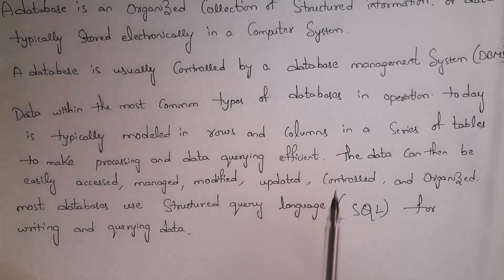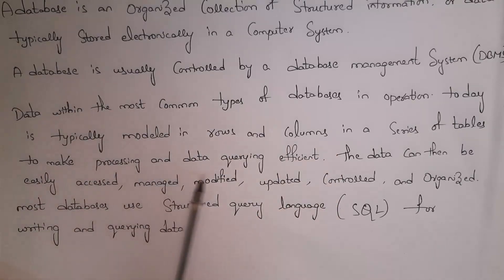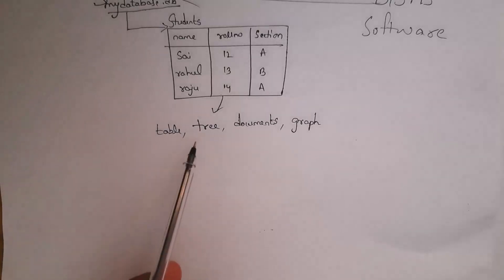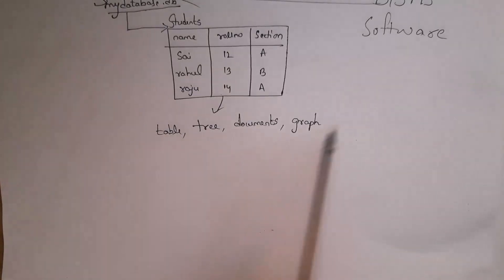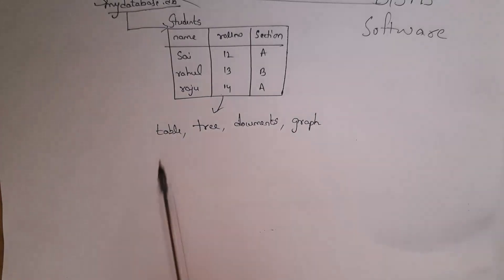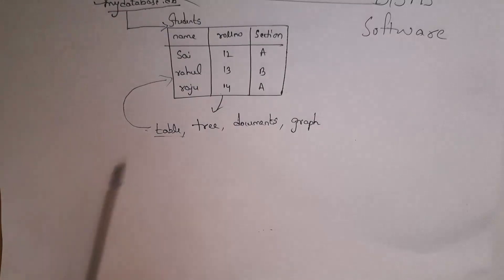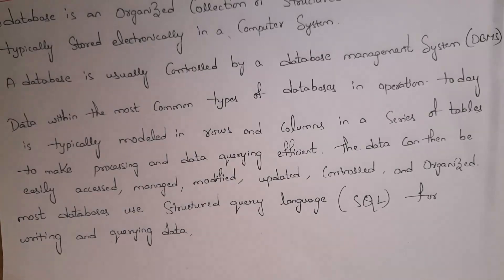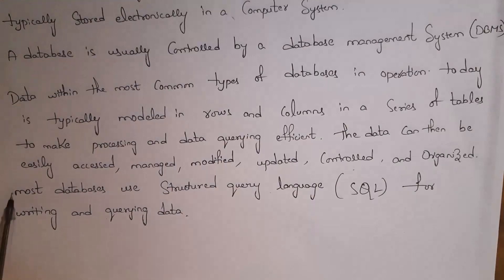Data within the most common types of databases today is typically modeled in rows and columns in a series of tables, to make processing and data querying efficient. In a database we can show data in various formats like tables, trees, documents, and even graphs. But many software companies prefer tables — rows and columns — because it is easy to access, modify, update, and control data.